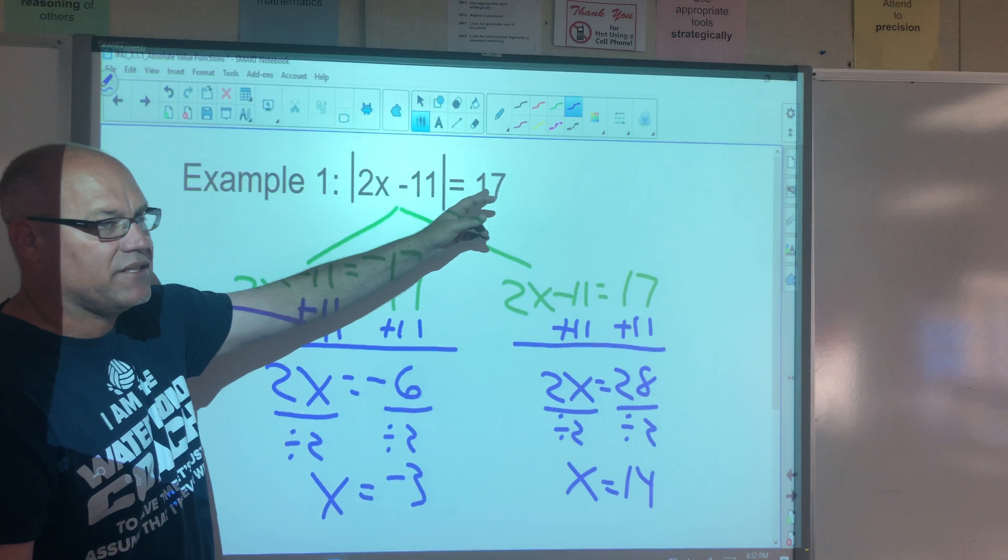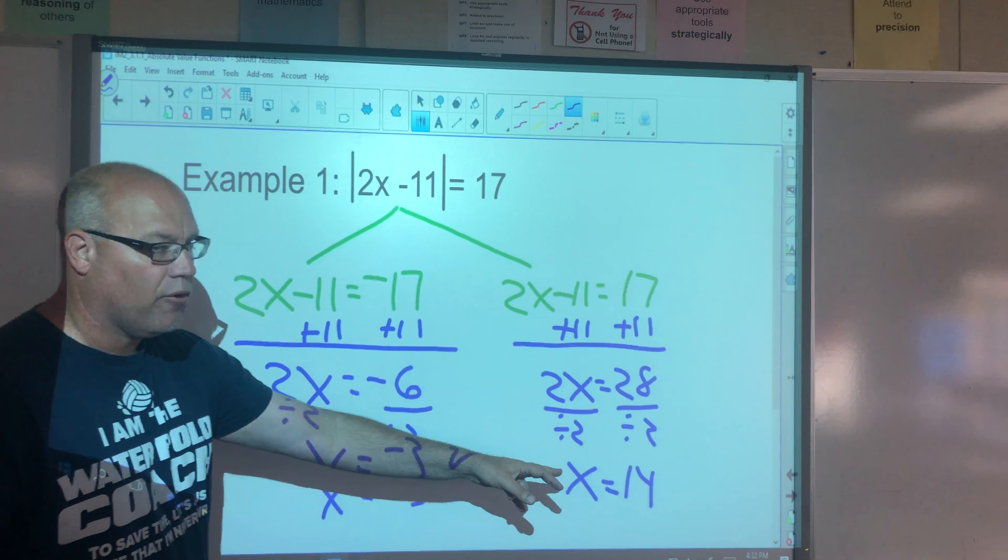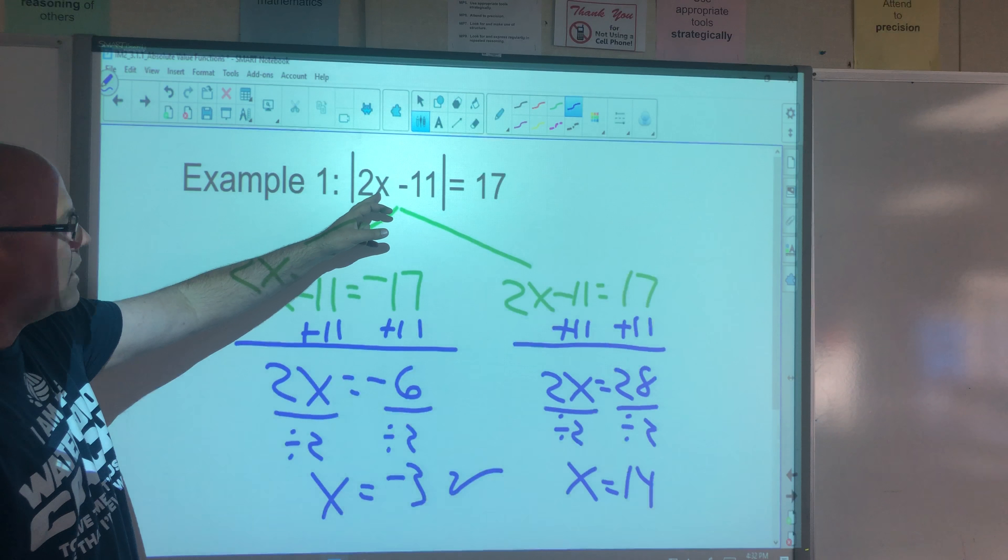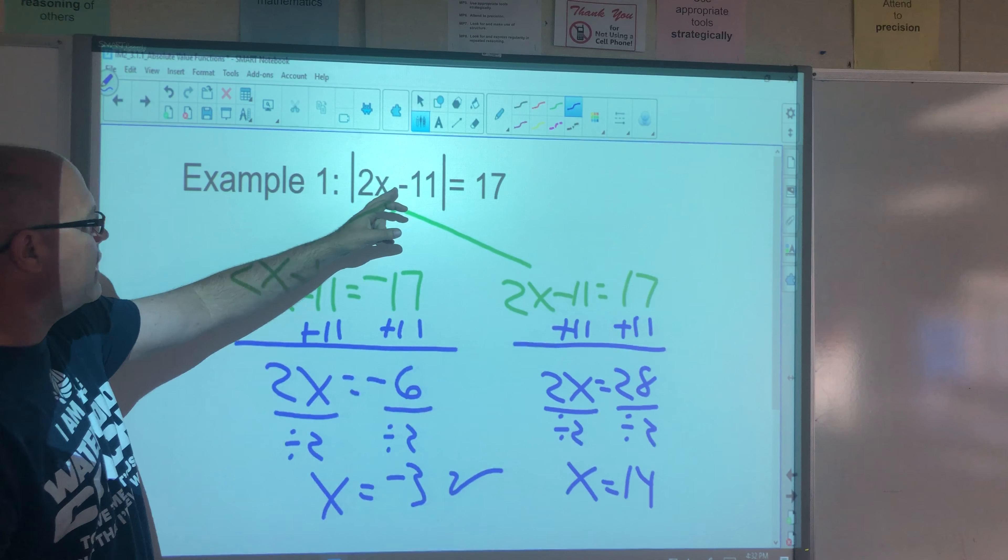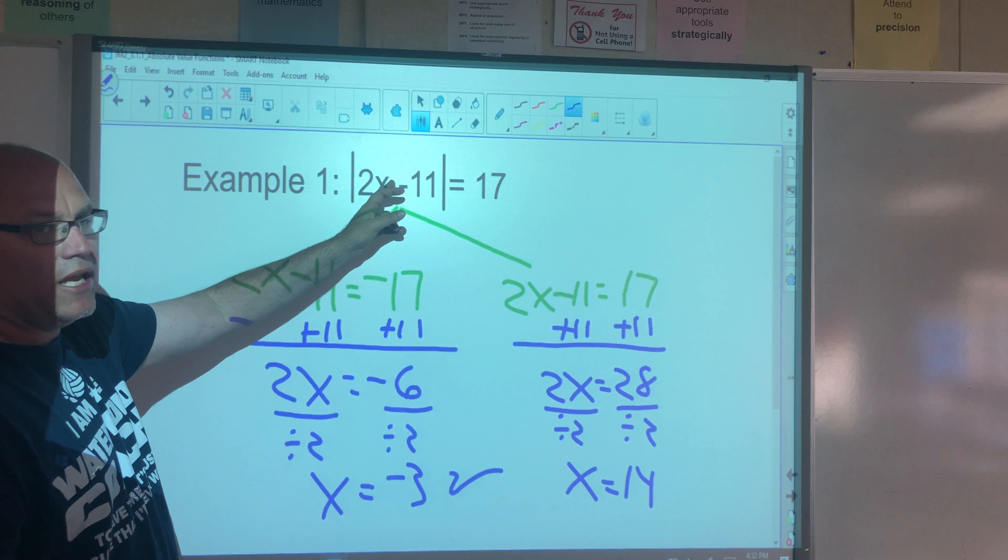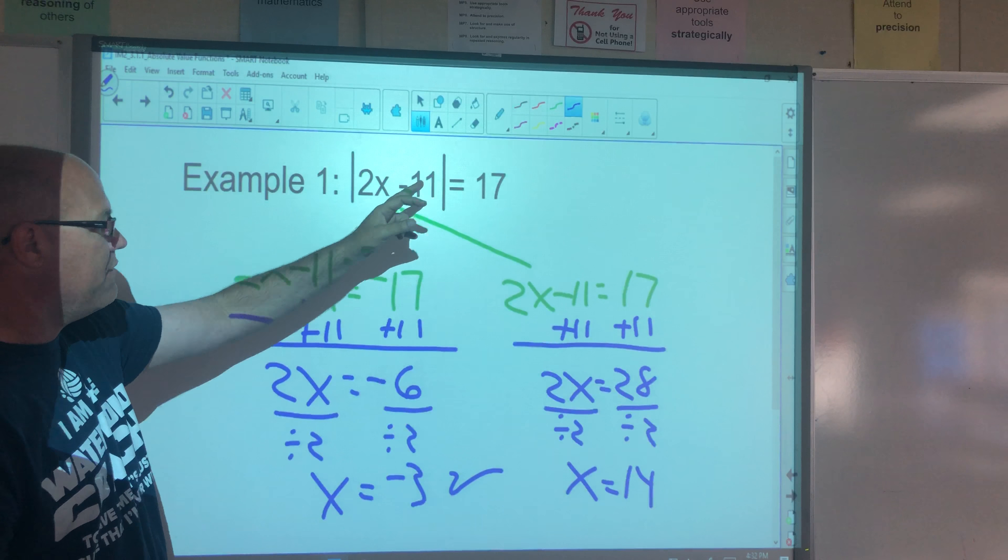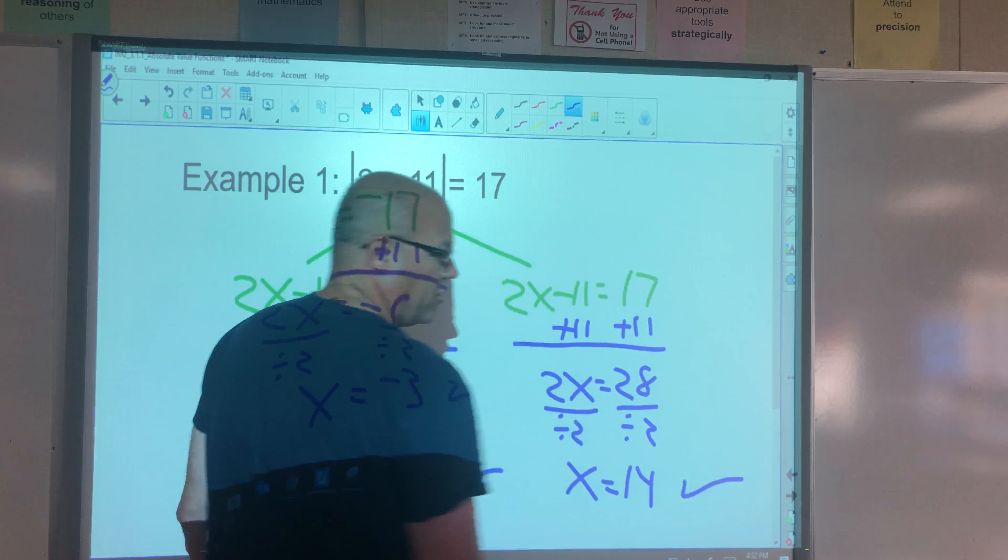Take the 14, substitute it in. 2 times 14 is 28. 28 minus 11 is 17. The absolute value of 17 is 17. Check. Those are two solutions.